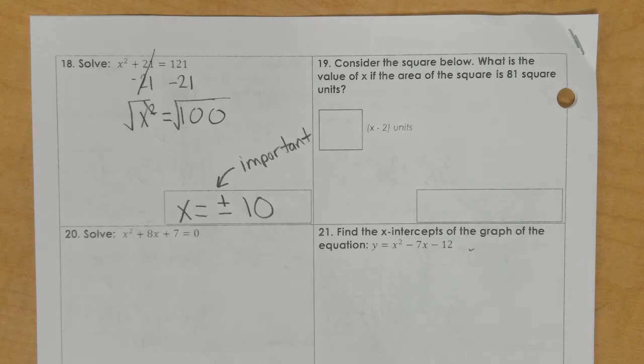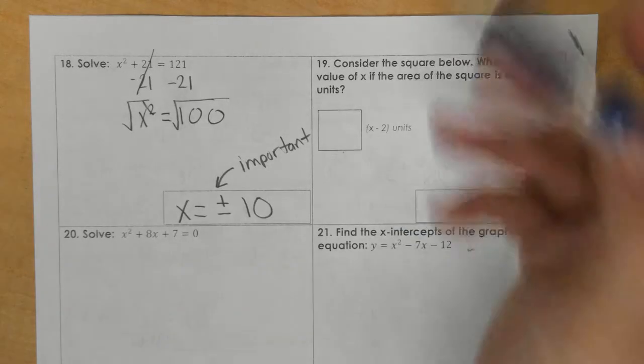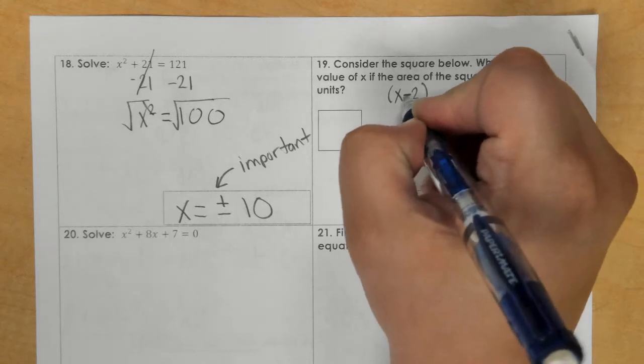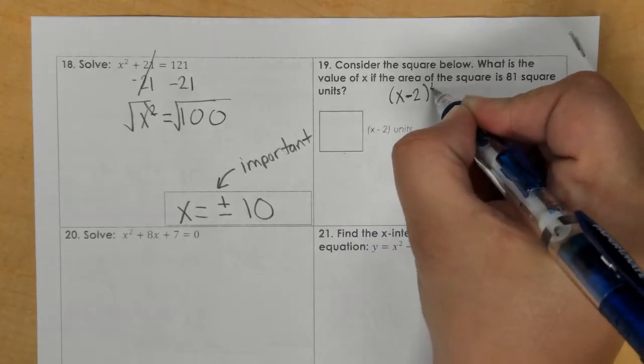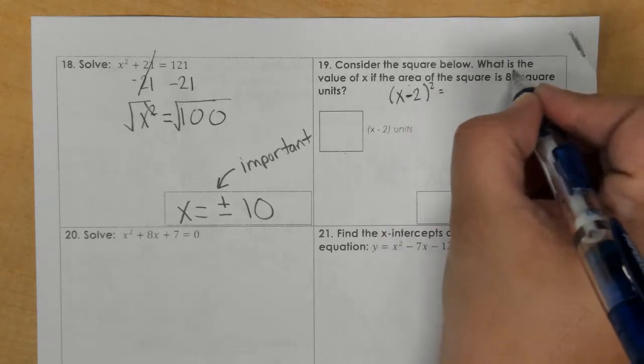In number 19, you need to set up your equation. So to find the area of a square, you would do side times side. Your side is x minus 2. And so since it would be two times that you would write it, you just put an exponent 2. And that equals your area, but your area of the square is 81.